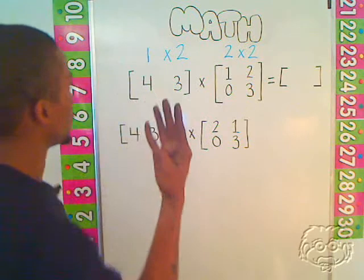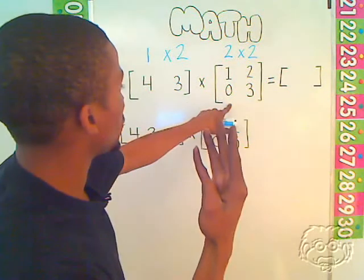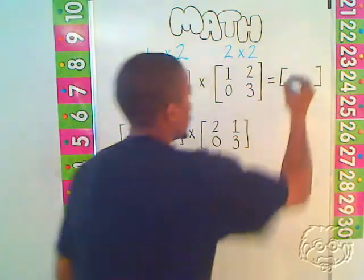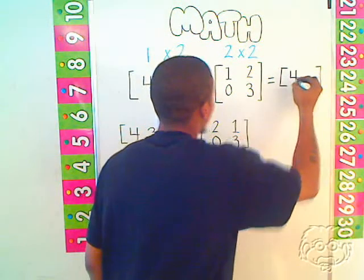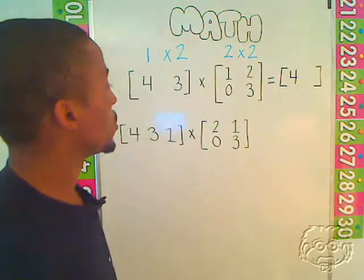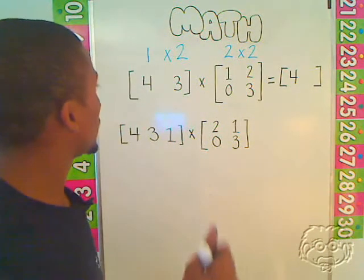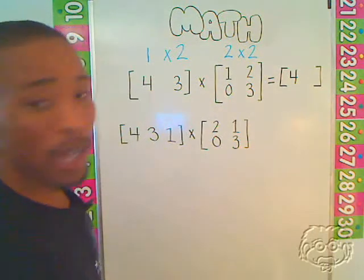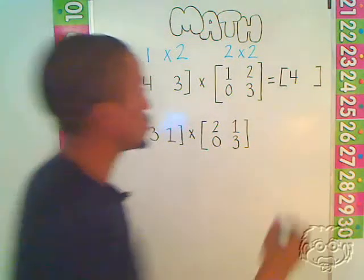4 times 1 is 4. 3 times 0 is 0. 4 plus 0 is equal to 4. Next, I have 4 times 2, which is equal to 8. And 3 times 3, which is equal to 9. 8 plus 9 is equal to 17.